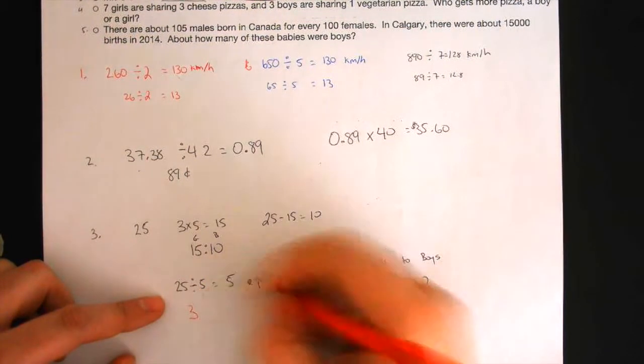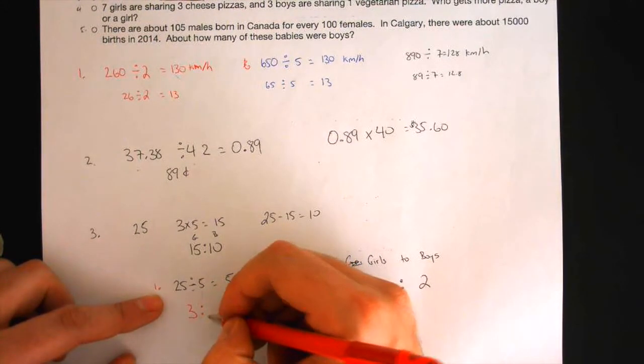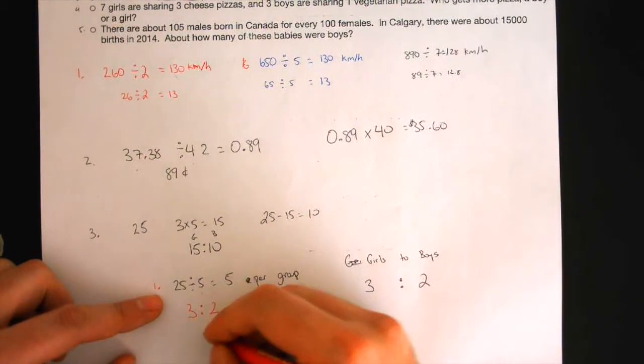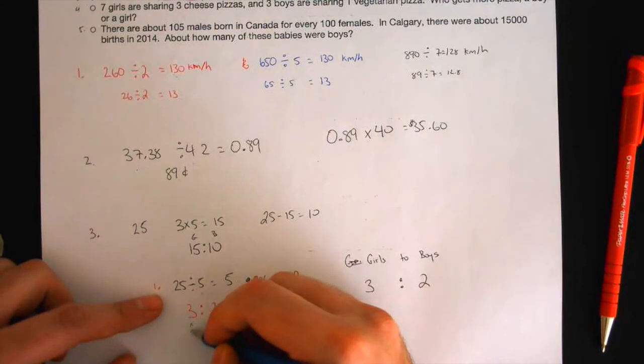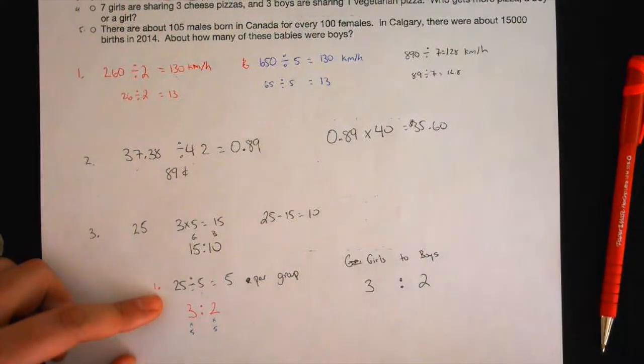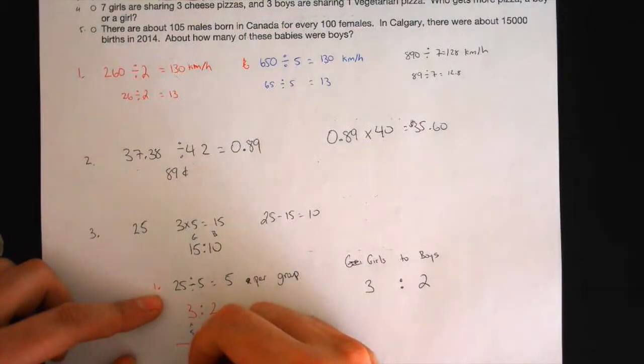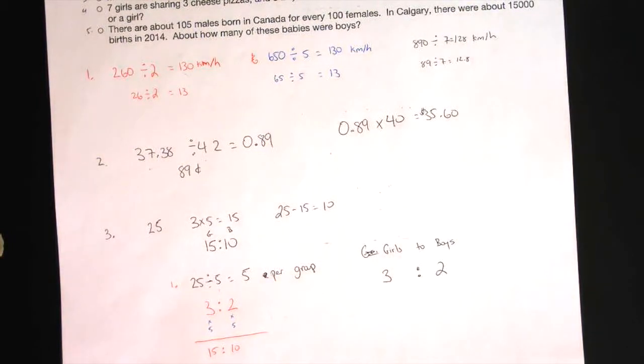So you figured out right away, this was your first step. And you knew that there was three girls. So you knew if there's five, it has to be two. And then you took this and you multiplied it by five, you said? Because there's five groups, and it gave you a total. I know this looks a little different than what you're used to. 15 to 10. That's another way to do it. Kind of like the fraction method.